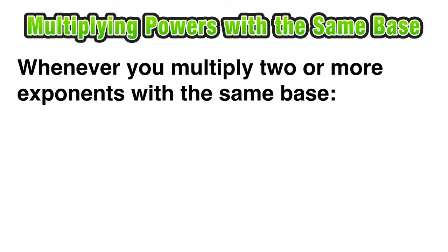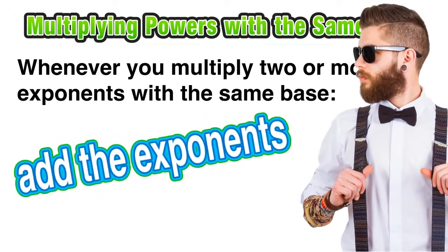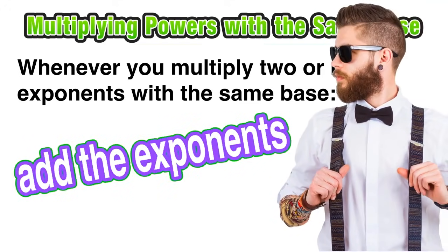In conclusion, whenever multiplying two or more exponents with the same base, you just add them up. Thank you for visually exploring this concept with us, and please feel free to check out our other lessons on the other laws of exponents.